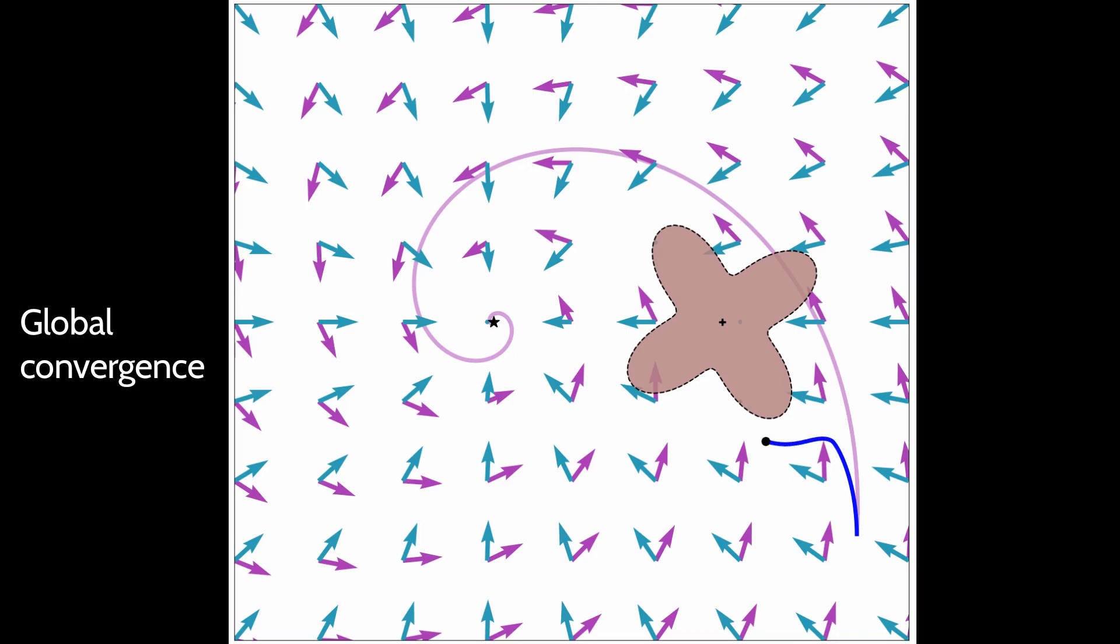When using the global convergence direction, which points towards the attractor, the obstacle avoidance can induce large variations compared to the initial trajectory in pink.